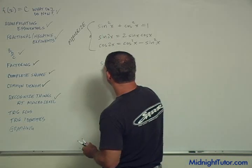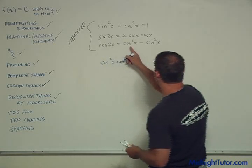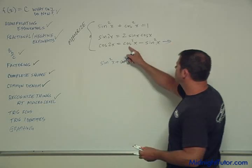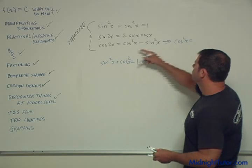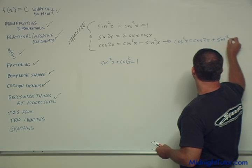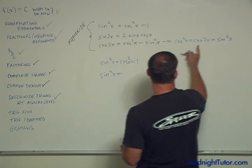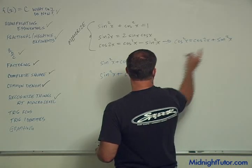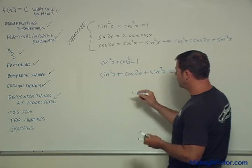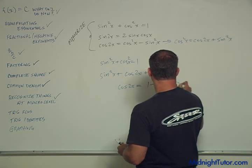sine squared x plus cosine squared x is 1, right? Well here, cosine squared x, if we take this equation, is the same as cosine 2x plus sine squared x, right? So we can plug that in here. So we have sine squared x plus cosine 2x plus sine squared x equals 1. Now let's pull our terms together. So we have cosine 2x is equal to 1 minus 2 sine squared x.